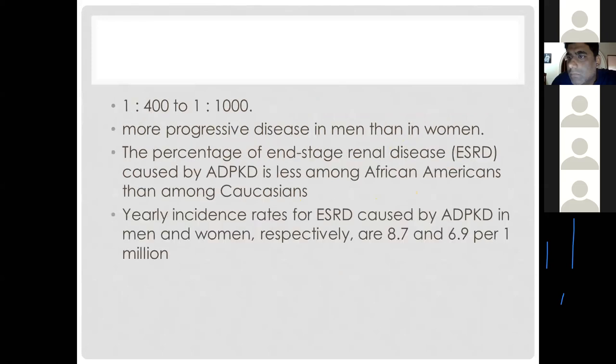The incidence of ADPKD is 1 in 400 to 1 in 1,000 births. The course of the disease is more progressive in men, who are more likely to develop end-stage kidney disease than women. Regarding racial distribution, the incidence of end-stage kidney disease is more common in Caucasians than in African Americans.